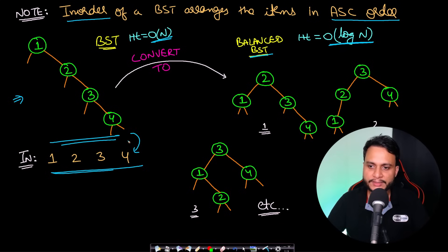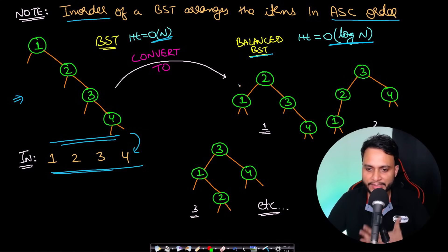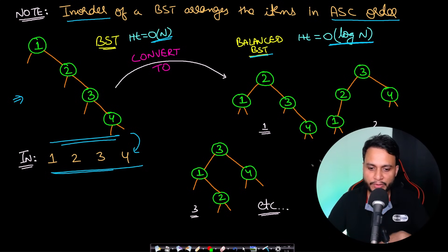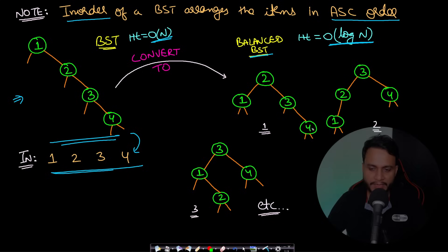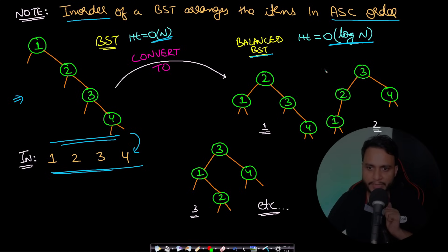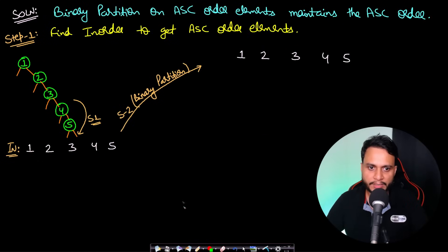When you balance a BST, there is not just a single unique result — multiple balanced BSTs are possible from the same set of values. Three possible answers are shown; there can be more. We just need to return any one valid balanced BST.